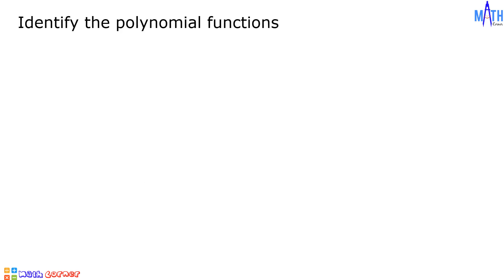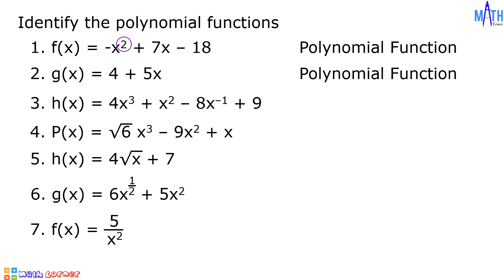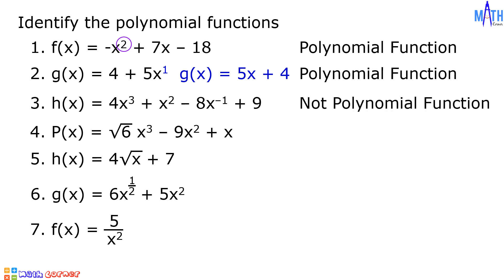Let us identify the polynomial functions from the given set of expressions. Number 1: F of X equals negative X squared plus 7X minus 18 — this is a polynomial function of degree 2. Number 2: G of X equals 4 plus 5X — this is a polynomial function of degree 1. In standard form, it is G of X equals 5X plus 4. Number 3: H of X equals 4X cubed plus X squared minus 8X raised to negative 1 plus 9 — this is not a polynomial function because X is raised to negative 1.